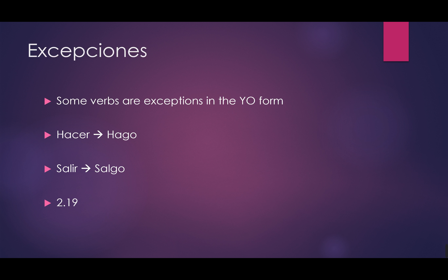Some verbs are also exceptions in the yo form — these are called the 'go verbs.' Por ejemplo, hacer is hago in yo form; salir is yo salgo. You basically have to memorize that. This is on page cincuenta in the textbook — look on page 50 and you'll see those exceptions. They're only exceptions in the yo form; otherwise they're regular verbs.